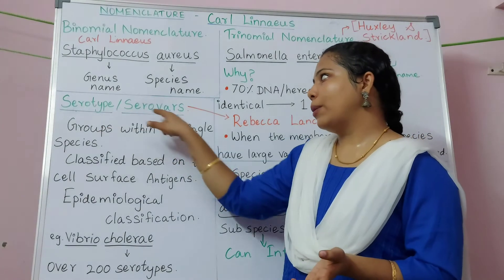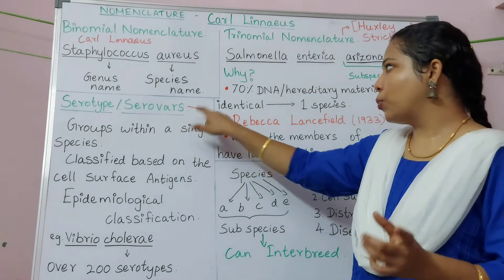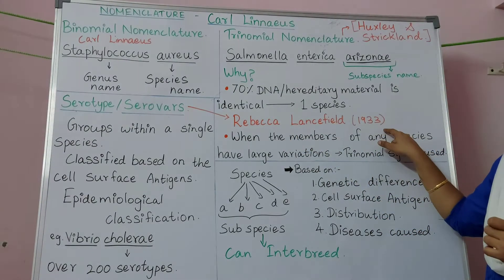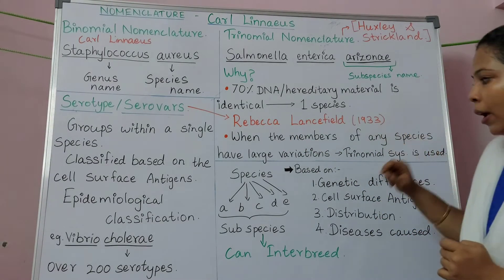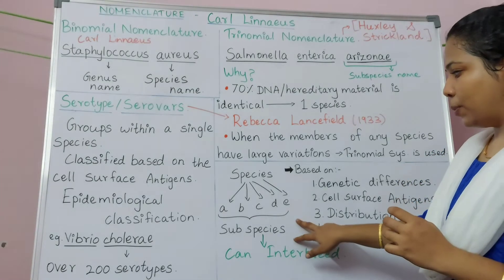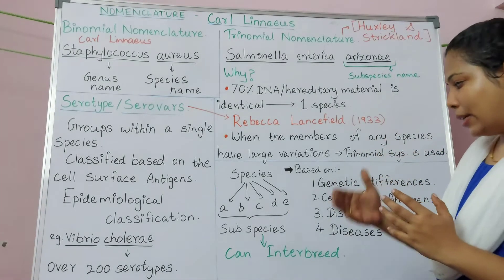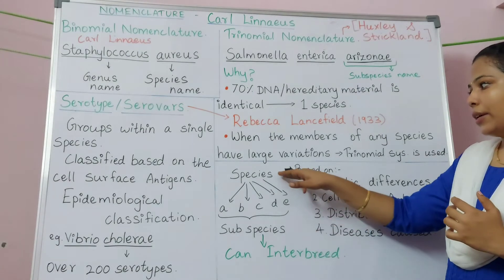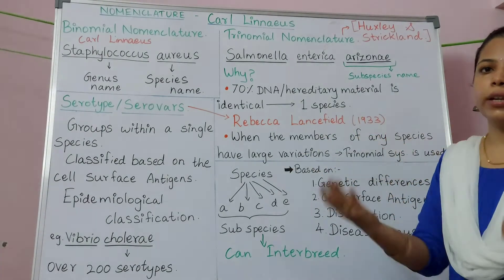In microbiology, this subspecies is called a serotype or serovar. The serovar was discovered by Rebecca Lancefield in the year 1933. A unique property of subspecies is that they can interbreed among themselves.